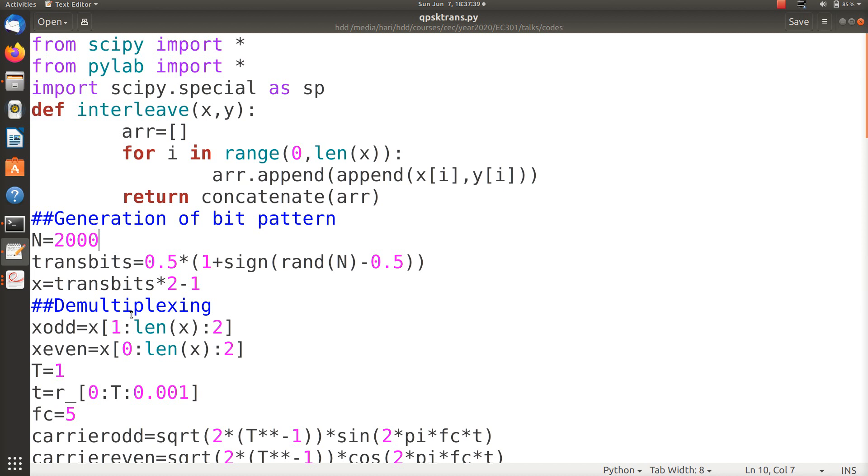Then random bits of size 2000 are generated. Then these bits are demultiplexed by means of this equation. So x_even is generated as x[0:len(x):2], so it will separate the even indices, and this will separate the odd indices. Note that it starts at one - x[1:len(x):2] - so it will take x1, x3, x5, etc., while x_even will have x0, x2, x4, etc.